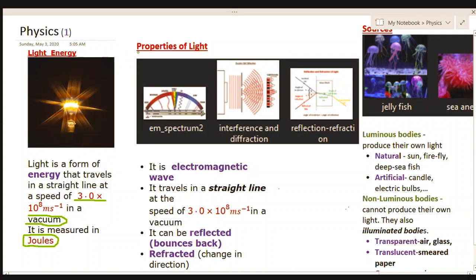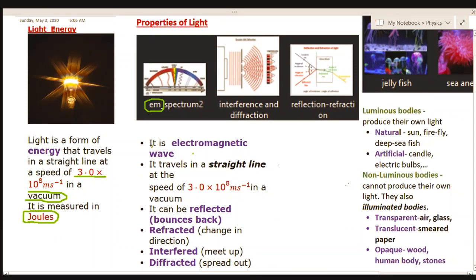Now we can look at the properties of light. Light is an electromagnetic wave. It means that it falls within the category of waves that we call electromagnetic spectrum. Waves that form the electromagnetic spectrum include X-rays, beta rays, gamma rays, etc. That is a topic for future discussion.